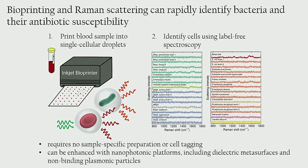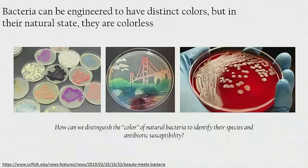The nice thing is it requires no sample-specific preparation or cell tagging, and it can also be strongly enhanced so we can visualize the color with a number of tricks that our colleagues are developing. For those familiar with bacteria, you probably know they can be engineered to express different colors — there are even art competitions in the Bay Area to make agar art with these engineered bacteria. But for the most part, across the dozens or so of bacteria you would run into, they're colorless. So how is it that based on the scattering spectrum we can actually identify their color without color-specific engineering?